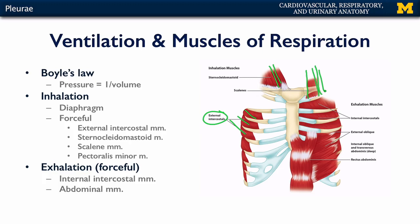Muscles such as pectoralis minor and serratus anterior can also come into play. Forceful exhalation is driven by a couple of different pairs of muscles. First, on the ribs, you have the internal intercostals.